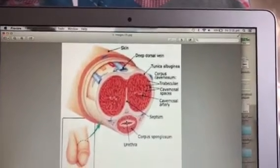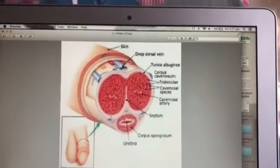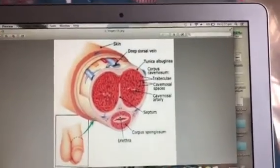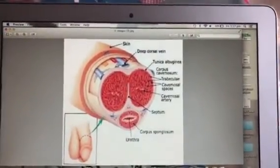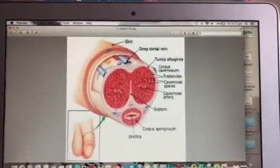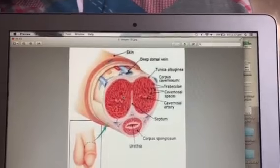Now this hollow tube is called the corpus spongiosum and it carries sperm and also carries urine. Now in order for erection to be maintained these vascular tubes have to expand which means this has to be highly elastic and blood has to flow inside.